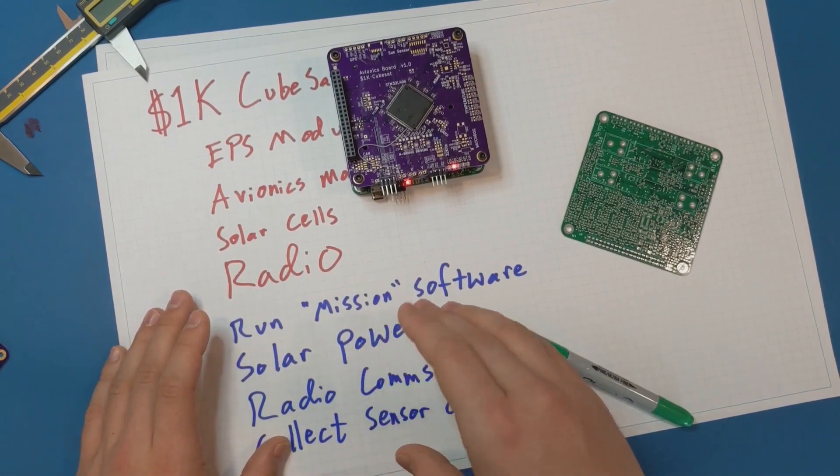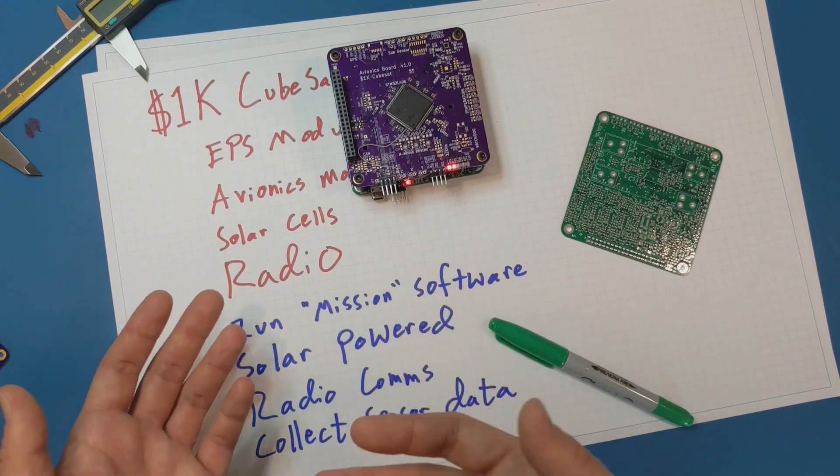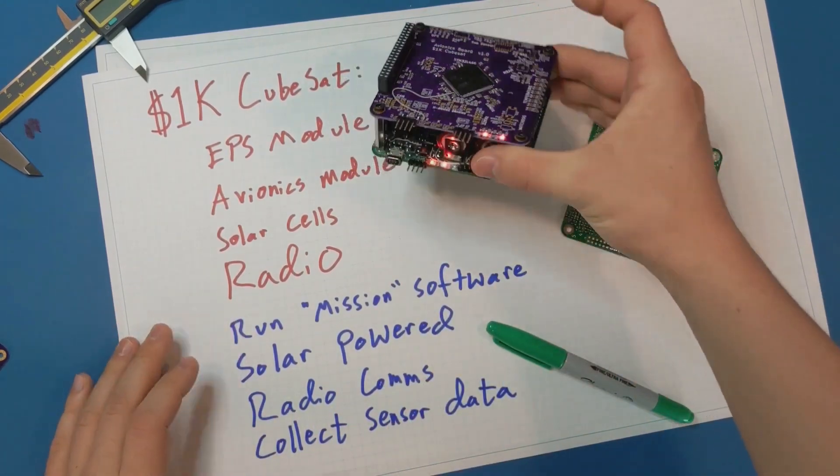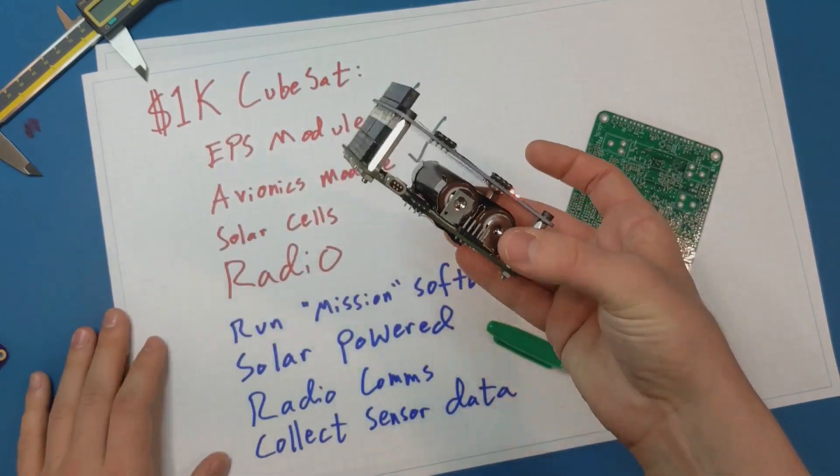The benefit of working with relatively cheap parts is that it doesn't cost me much to iterate and improve the design. On the topic of cost, how much did building this 1.5 CubeSat cost?